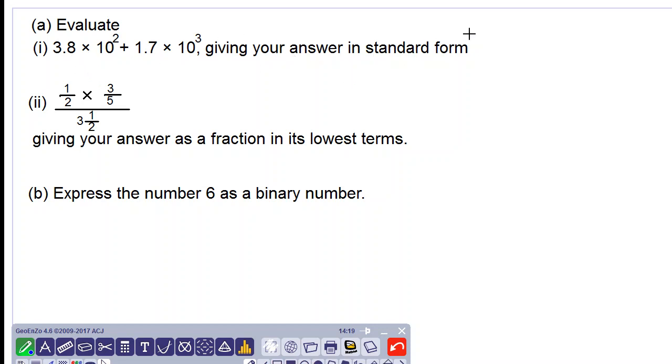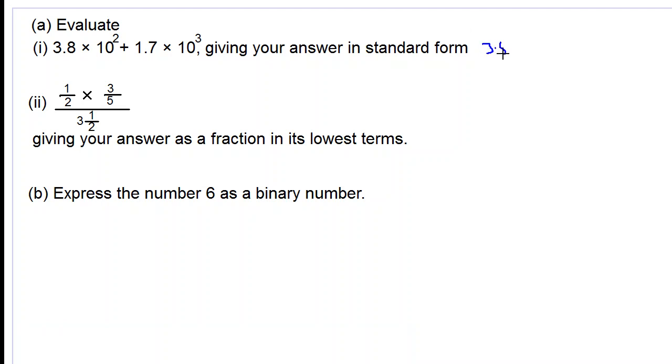3.8 × 10² is 3.8 times 100, which is 380. Moving the decimal point two places to the right.